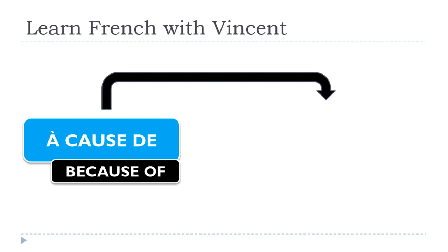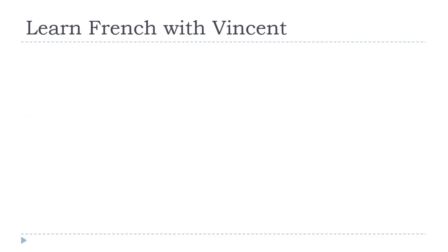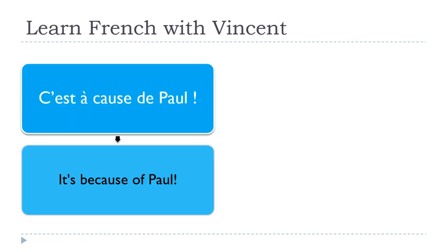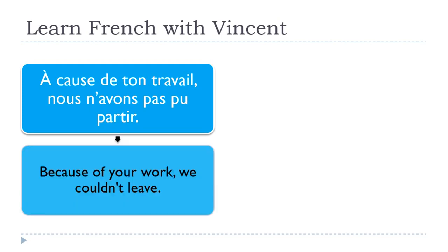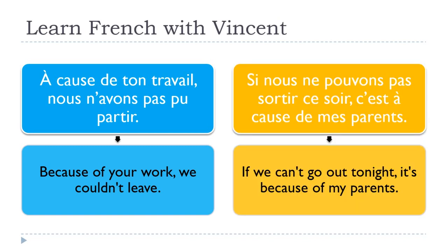It's also possible to use « à cause de » with a noun. « C'est à cause de Paul. » — It's because of Paul. « C'est à cause de mon frère. » — It's because of my brother. « À cause de ton travail, nous n'avons pas pu partir. » — Because of your work, we couldn't leave. « Si nous ne pouvons pas sortir ce soir, c'est à cause de mes parents. » — If we can't go out tonight, it's because of my parents.